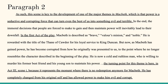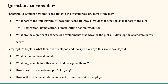Hopefully that helps you have an idea of what I'm looking for. Questions you'll consider in your worksheet: For paragraph one — what part of the plot pyramid does the scene fit into? How does it function as that part of the plot? What are the significant changes or developments that advance the plot or develop the characters? For paragraph two — what is your theme statement? What happened before this scene to develop the theme? What big actions went on before that support the theme? How does this scene specifically develop it? What examples do you see? And how will this theme continue to develop over the rest of the play — how will it eventually play out?